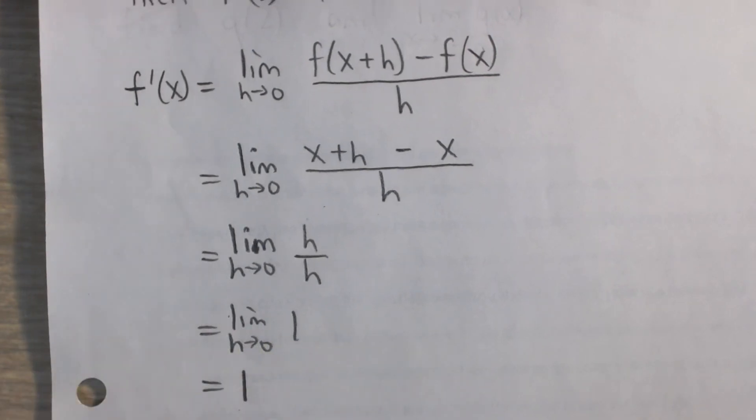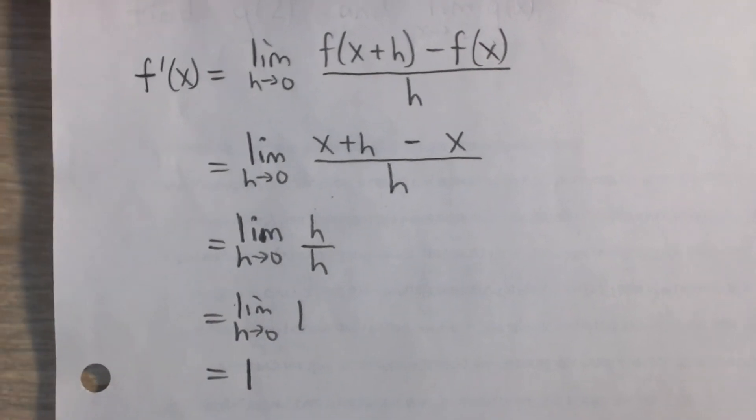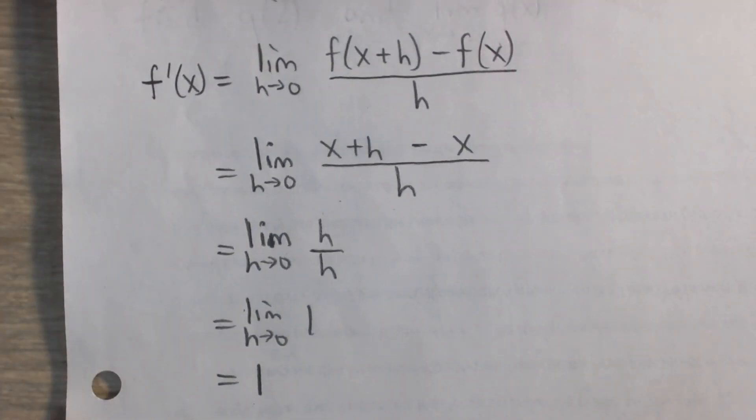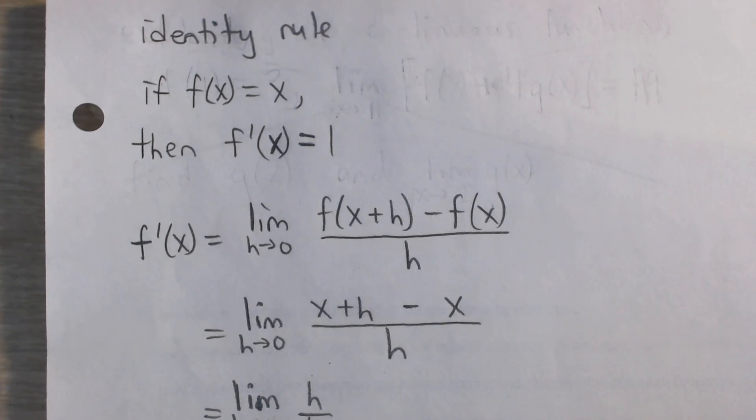And of course, at this point, there is no h in the expression, so we can just get rid of the limit. And so this is equal to 1. And so that proves that the derivative of f of x equals x is 1, the constant function 1.